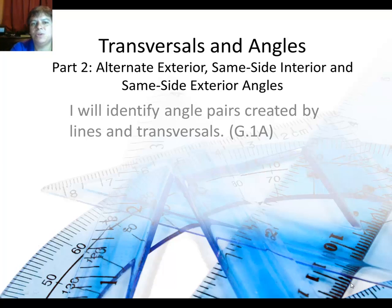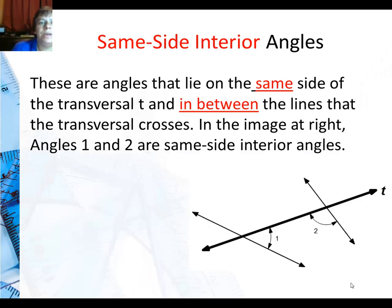Now we have three more angle pairs we're going to learn about: alternate exterior, same-side interior, and same-side exterior. These words are really important.